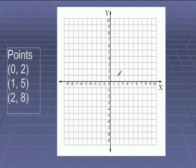So here are our points. So we need to graph them. So the first one is 0, 2. So we're going to start at 0. We don't need to go on our x-axis because it's 0. We're going to go up 2. So that's our first point. 1, 5. We're going to go over 1 and up 5. And then 2, 8. Over 2, up 8.